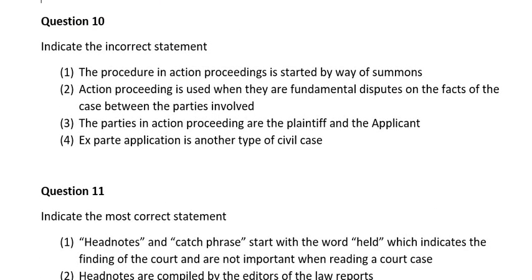Question ten. Indicate the incorrect statement. Number one, the procedure in action proceedings is stated by way of summons; number two, action proceedings is used when there are fundamental disputes on the facts of the case between parties involved; number three, the parties in action proceedings are the plaintiff and the applicant; number four, ex parte application is another type of motion case. The correct answer is number three: the parties in action proceedings are the plaintiff and the applicant.